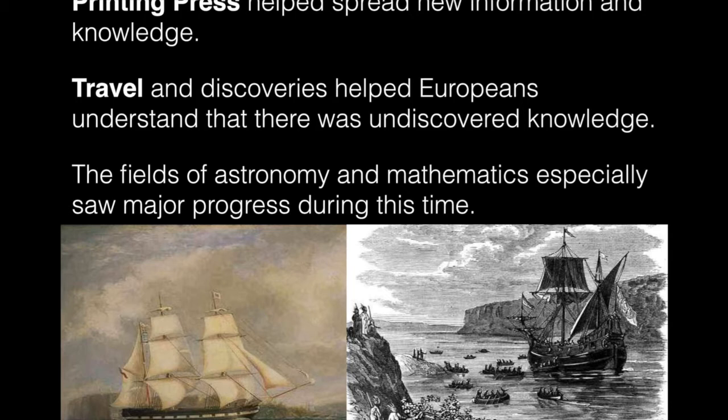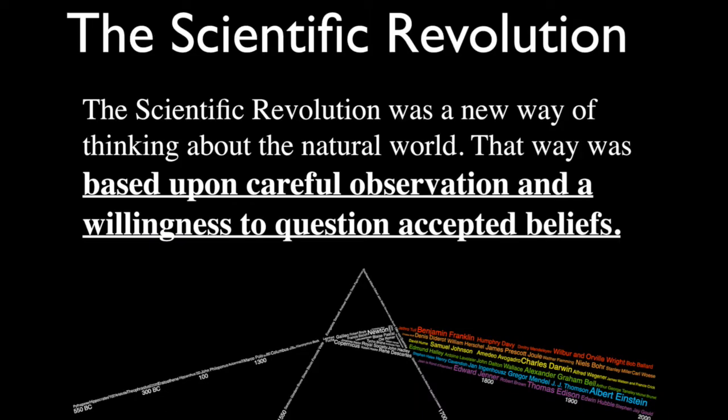First of all, information is spreading much faster with the printing press invented by Johannes Gutenberg. Through travel, Europeans are beginning to get access to new information and inventions they never had before — the astrolabe from the Arab world, the magnetic compass from China. They're also discovering various mathematical and algebraic concepts from the Arab world and from India. So we're getting major progress just by taking in and consuming information from other societies.